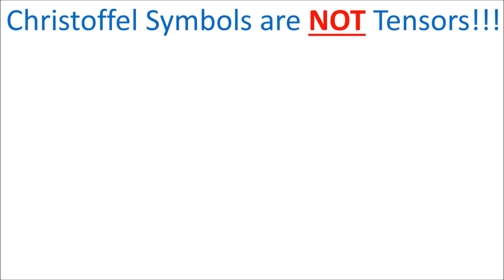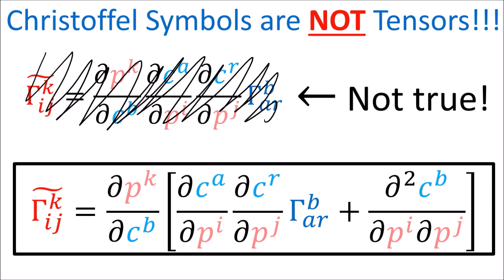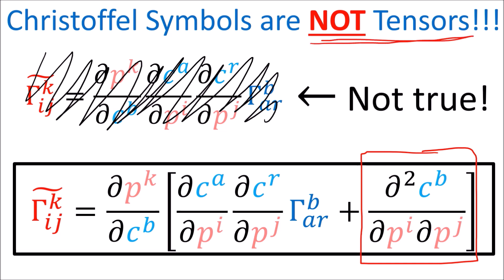One last thing: Christoffel symbols are not actually tensors. Christoffel symbols are an array of numbers with indexes, but they do not transform with the expected tensor transformation law using Jacobians and inverse Jacobians. Instead they transform with a more complex law which has an extra term added on, making it not the ordinary tensor transformation law. So Christoffel symbols are not tensors. I'm going to go through a derivation of this law, but it's going to take four slides — so if you don't want to sit through all that, you can stop watching now. Just remember that the Christoffel symbols are not tensors.